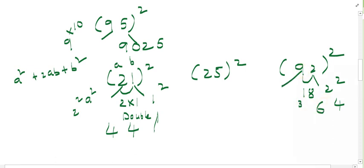Then this number, 9 square, 81. 81 plus 3, we get 84. So 8, 4, 6, 4 is the answer.